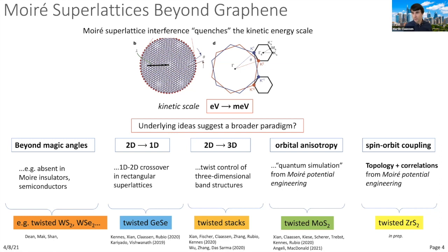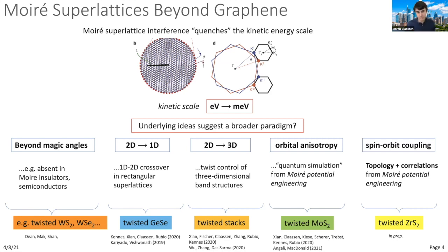One can also go in the opposite direction: start from a 2D twisted heterostructure and use it as a building block for a three-dimensional crystal. With advances in experimental composition of heterostructures, this is now within reach, and simple examples have already been demonstrated. One can take a twisted heterostructure as an ingredient and build a 3D material allowing twist control of the complete three-dimensional band structure—I'll discuss an example from a recent proposal with the Das Sarma group.